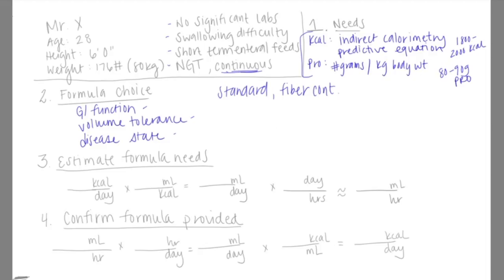Some things to know about this particular formula: It has one and a half kcals per milliliter. It has 63.8 grams of protein per liter. And it also has 760 milliliters of free water per liter. The last thing to know about this formula is that it takes 1000 milliliters to meet the DRIs.